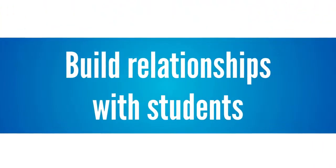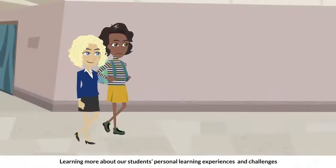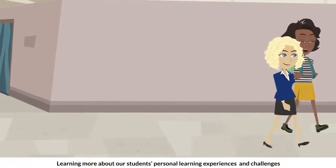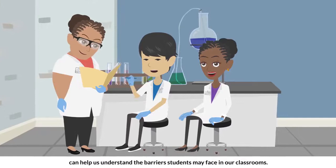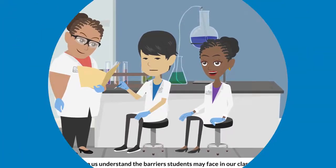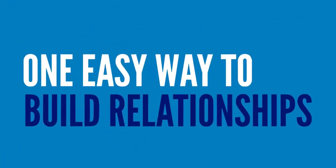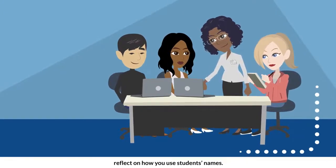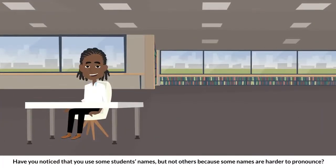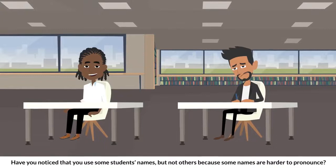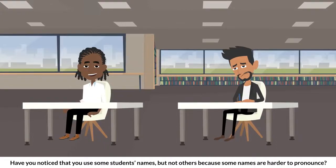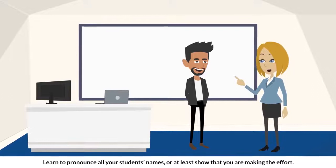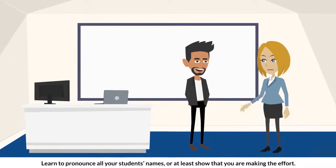Build relationships with students. Learning more about our students' personal learning experiences and challenges can help us understand the barriers students may face in our classrooms. One easy way to build relationships is to reflect on how you use students' names. Have you noticed that you use some students' names but not others because some names are harder to pronounce? Learn to pronounce all your students' names, or at least show that you are making the effort.